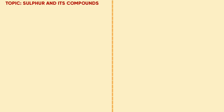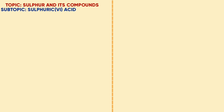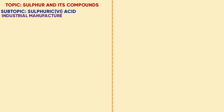Welcome learners. In our lesson today we look at sulfur and its compounds. The subtopic is sulfuric acid. We look at industrial manufacture, physical and chemical properties of dilute sulfuric acid, then physical and chemical properties of concentrated sulfuric acid.